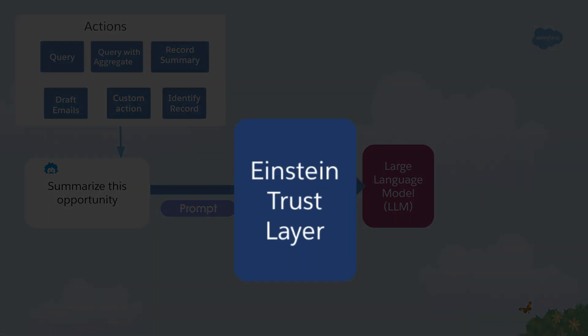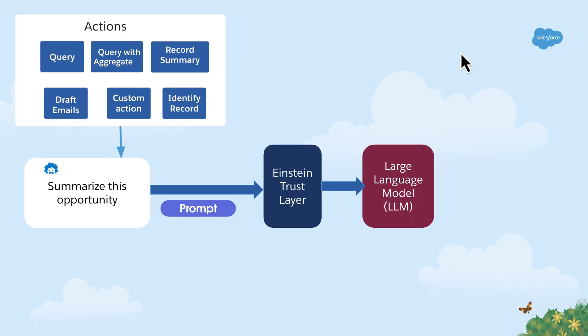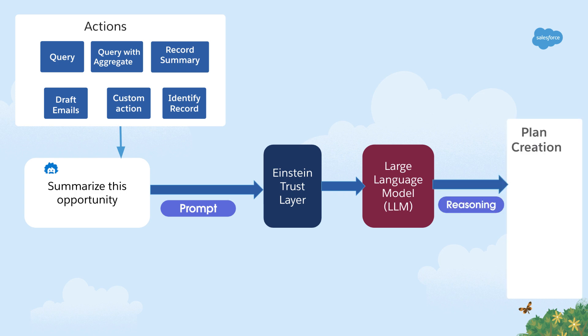The Trust Layer ensures masking of PII info, filters toxicity, and ensures the LLM is not retaining any of your data. The LLM uses the names and instructions for each Copilot action to identify the best matching actions based on the user's intent. Because the LLM can analyze these actions, it puts them in the right order for execution. This ordered list is also known as a plan, and the LLM's ability to create this plan is also called reasoning.